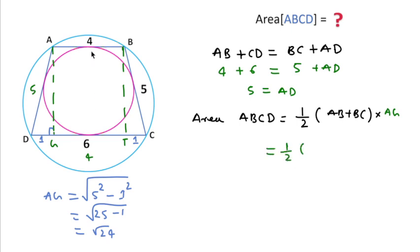Now we can write 1/2 times the sum of parallel sides, that is AB plus BC, which is 4 plus 6, and AG is square root of 24.